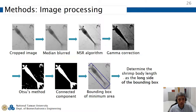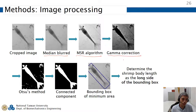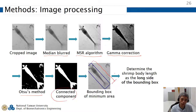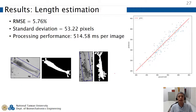After shrimps are detected, the next step is to measure their body length using a series of image processing steps including median blur, MSR algorithm, gamma correction, Otsu's method, and connected component labeling. We then use the minimum bounding rectangle to determine the length of the shrimp. The root mean square error for length estimation is approximately 5.6 percent.